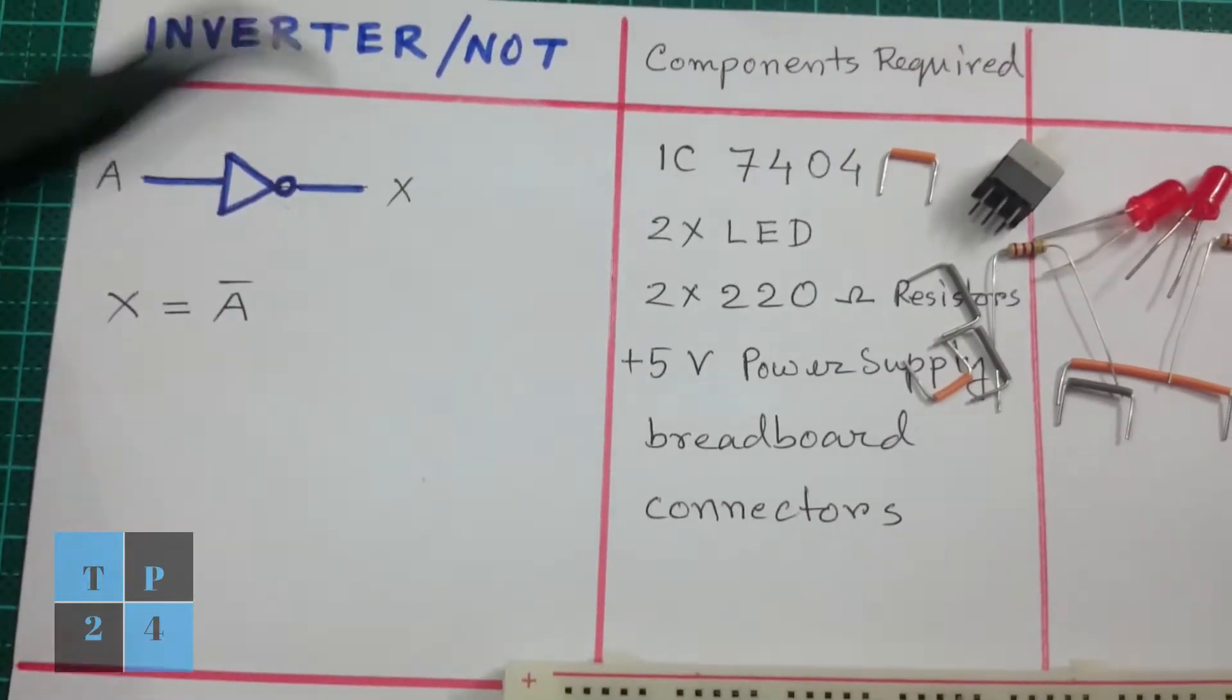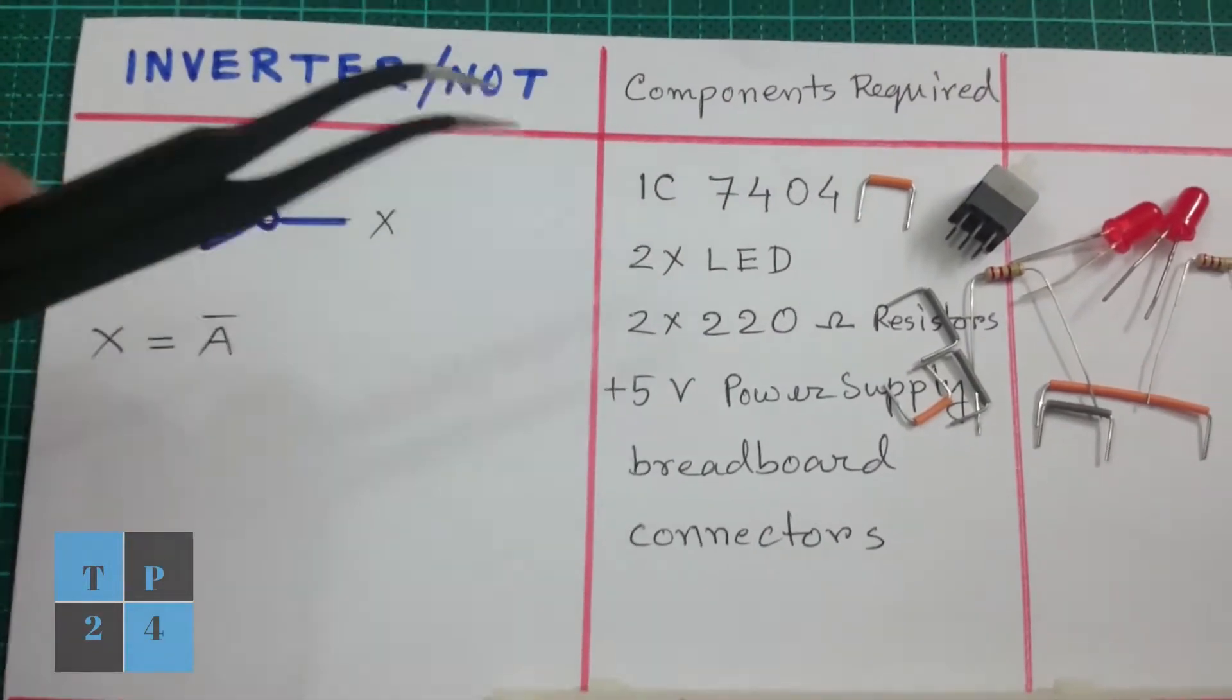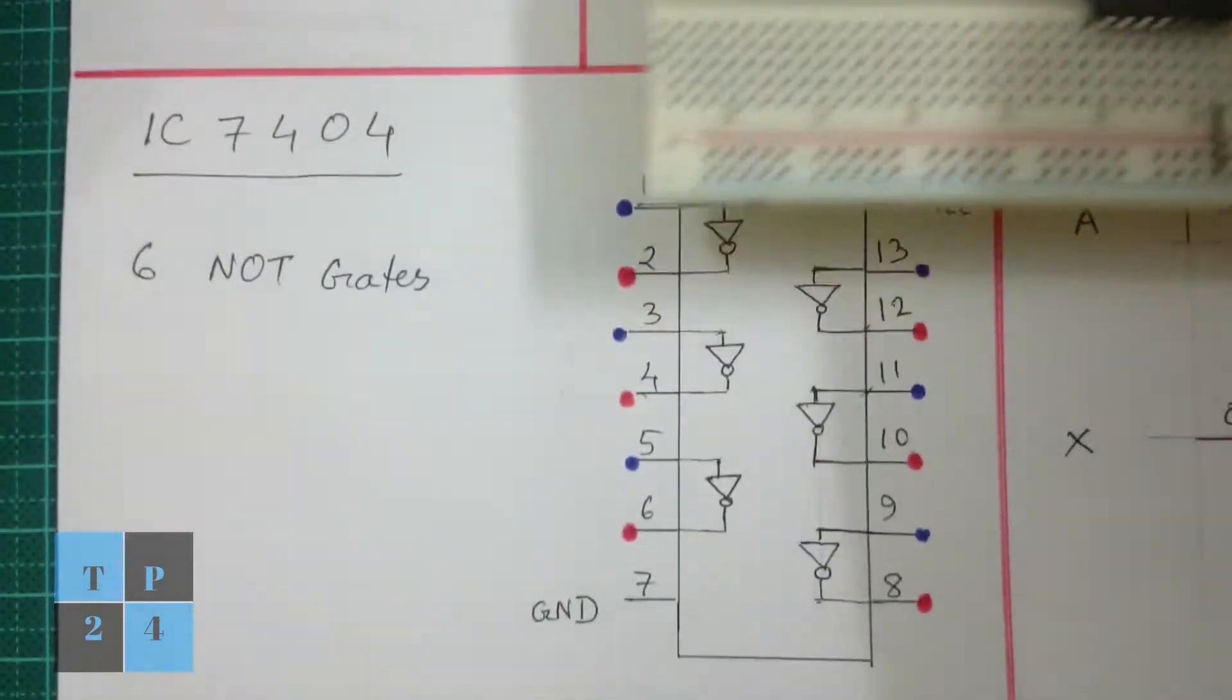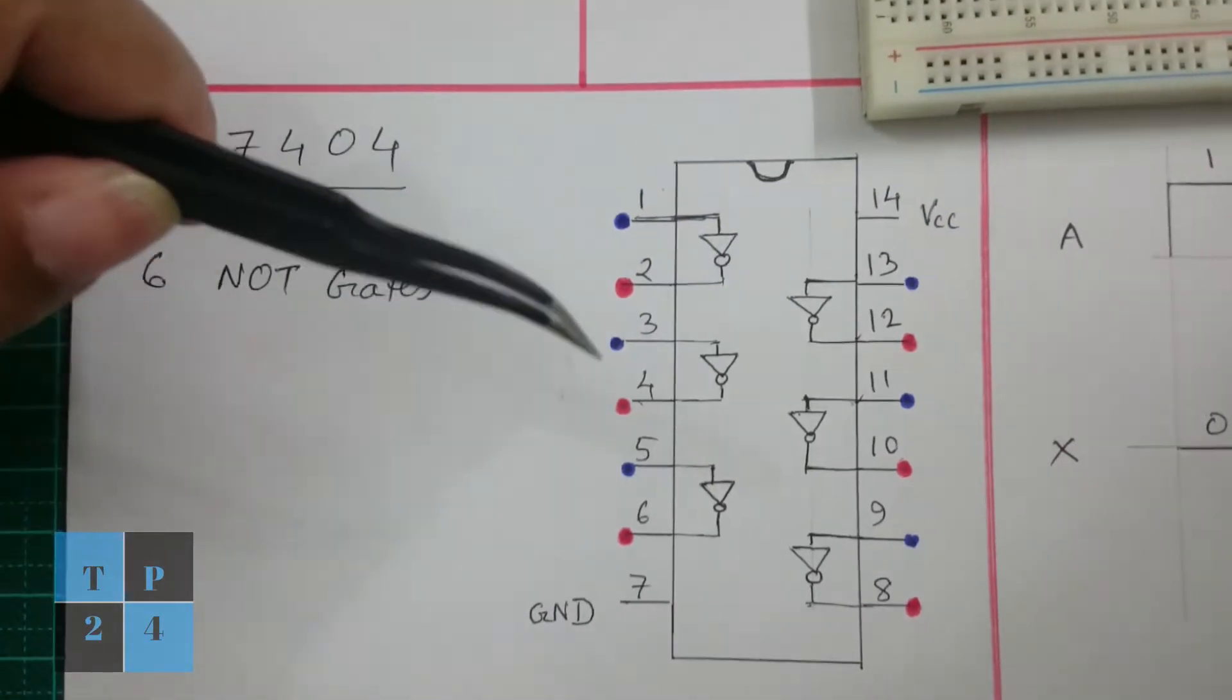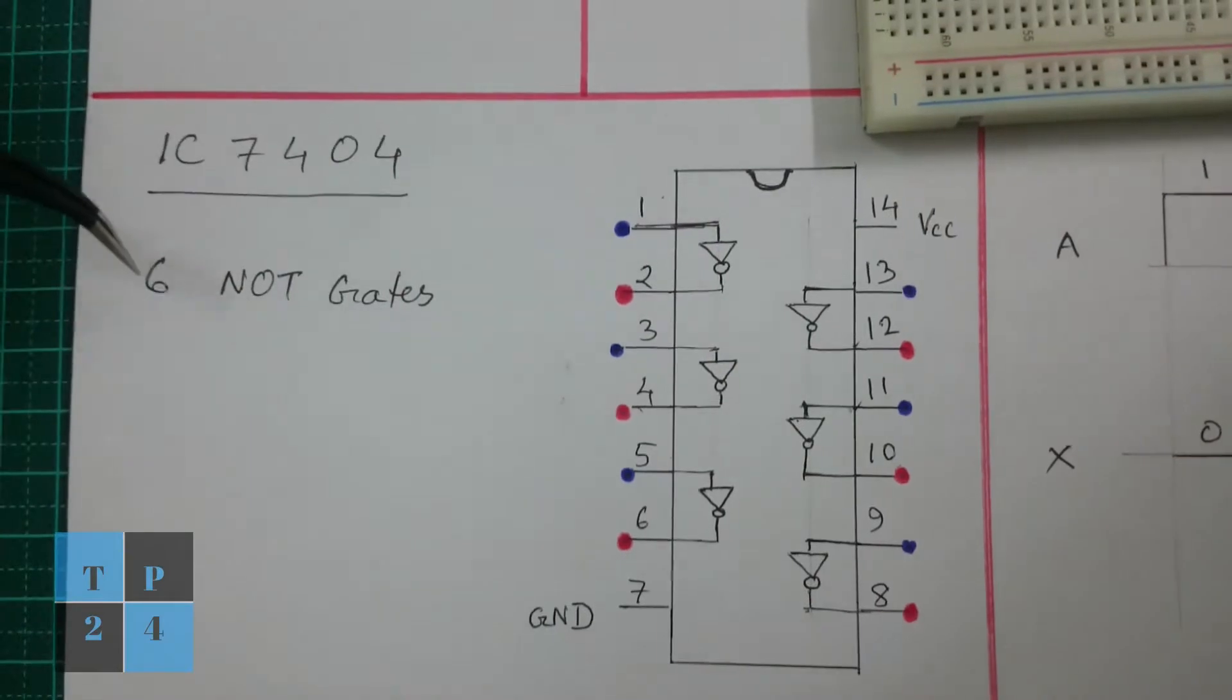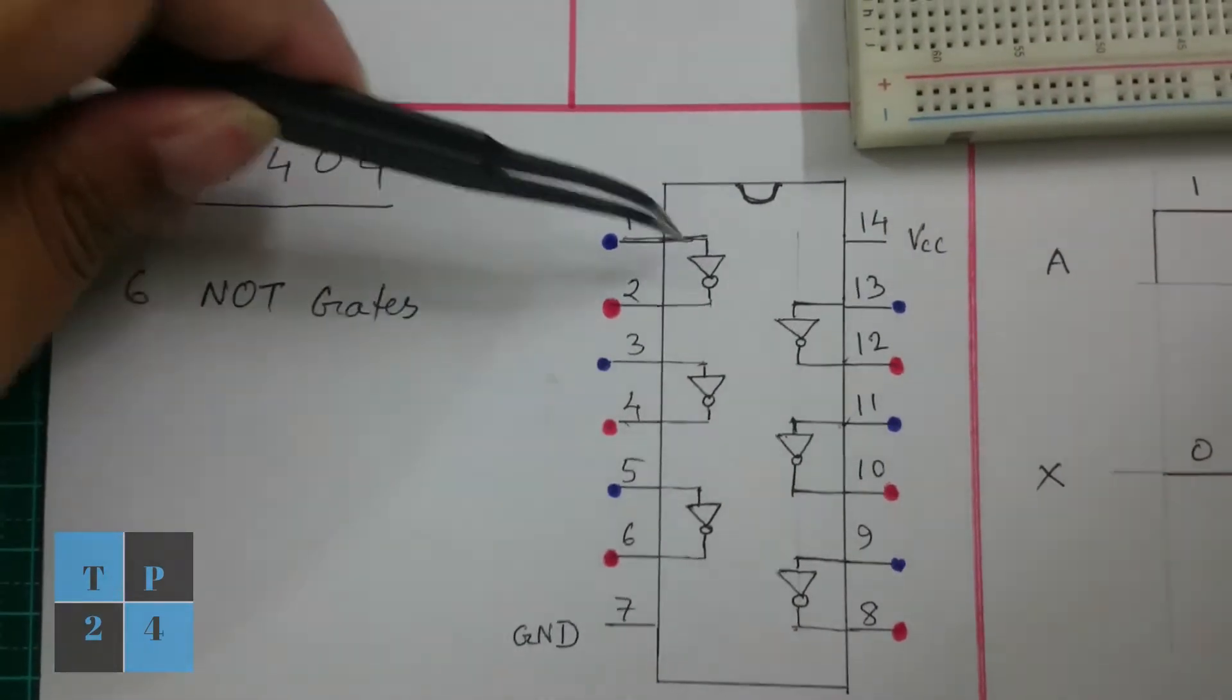I am going to use IC7404 to explain the inverter or NOT gate. If you look at this IC pin configuration, this IC has six inverters.